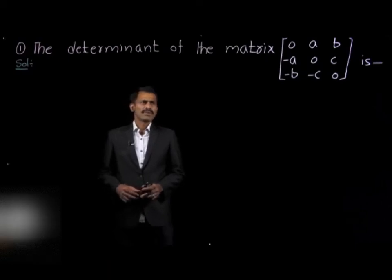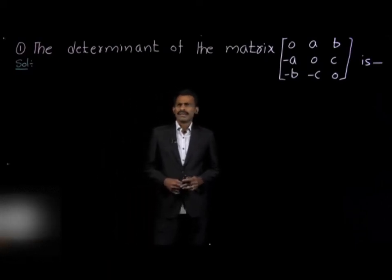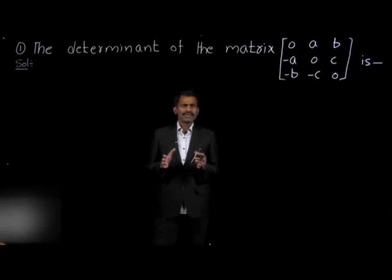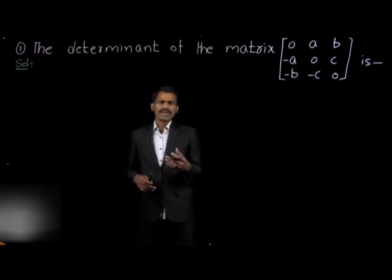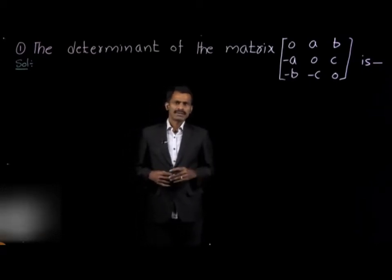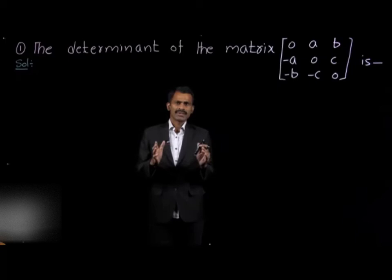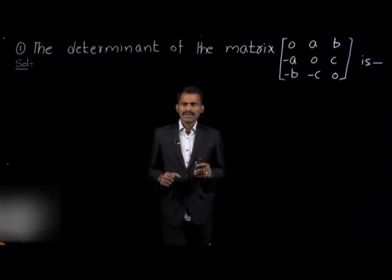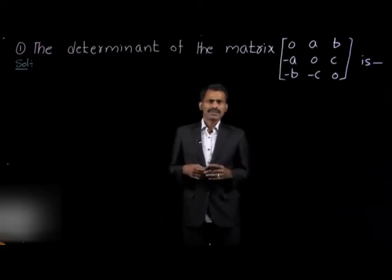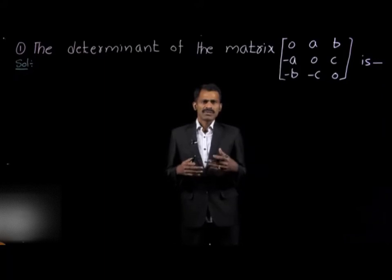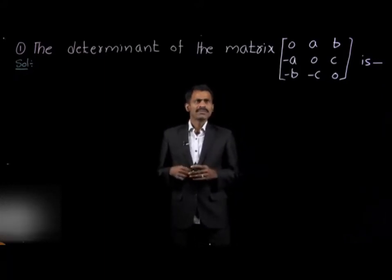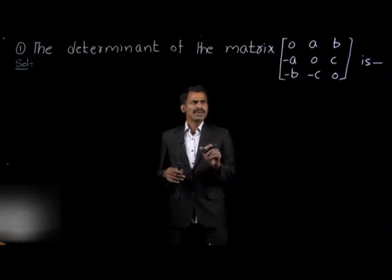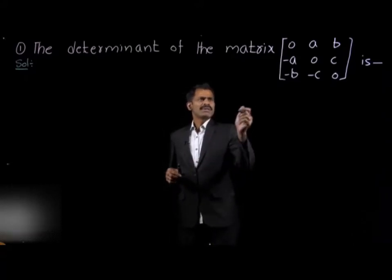This belongs to linear algebra. We are given a 3 by 3 matrix and are asked to find its determinant. Before finding the determinant, first you have to observe the elements of the matrix. By observation, sometimes we can directly tell the answer to the question. So observe the elements of the 3 by 3 matrix carefully.